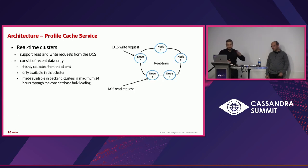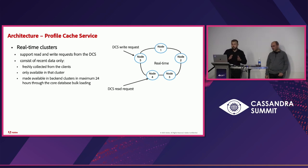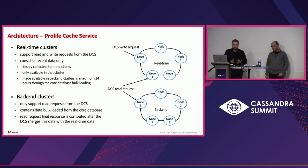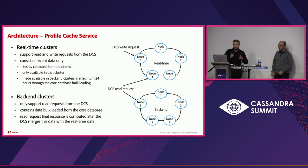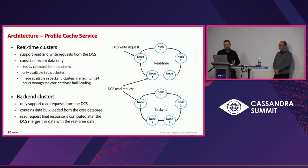In terms of data access, the real-time clusters support read and write operations from the data collection service. They contain new, fresh data that is only present in that particular edge region until around 24 hours later, when it is pushed from the core database to the backend clusters in one or more regions. The backend clusters are read-only — new data only arrives through bulk loading from the core database. When serving a read request, the data collection service reads from both the backend cluster, where data is historically aggregated, and the real-time cluster, where it is recent, merging the response before sending it.